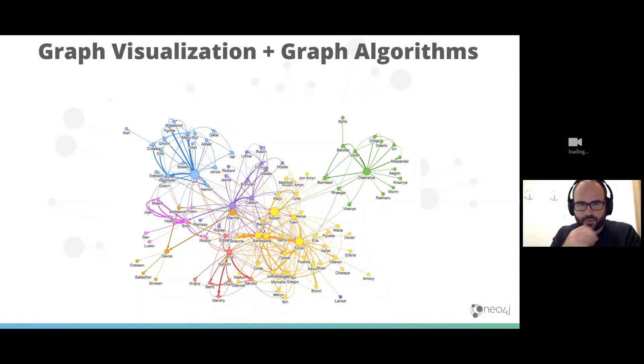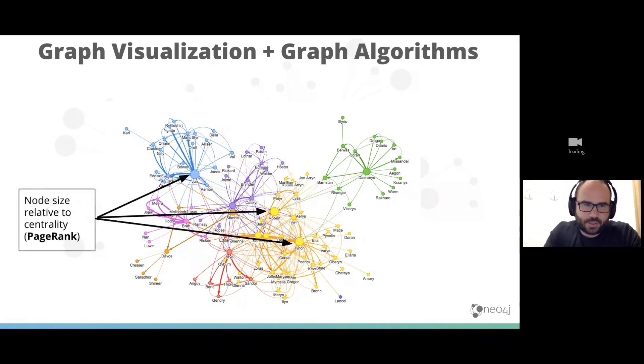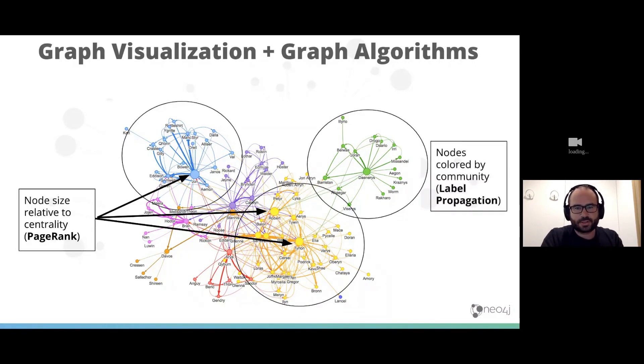So here we have a graph visualization. This is Game of Thrones data. You may have seen some of this before. What I want to do is sort of dissect what's going on in this visualization. We can see some nodes are larger than others. In this case the node size is relative to a centrality metric, in this case page rank. We have different colors in the graph. Nodes are colored by community, which is the result of running the label propagation algorithm, which is a community detection algorithm.